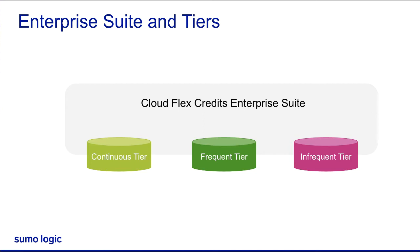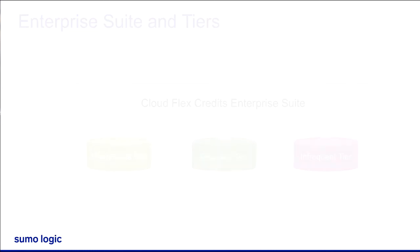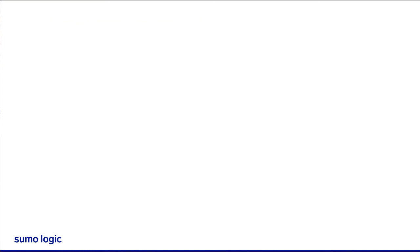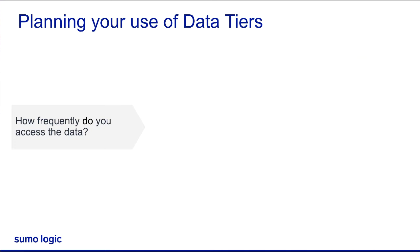Sounds good. I need some best practices for organizing data in different tiers, so I can have the most effective monitoring and troubleshooting. At Sumo, we recommend you select the data tier for a particular data set based on how often you'll access the data and how you need to access it. Consider the data you use to monitor and troubleshoot production applications and to ensure the security of your applications — this data belongs in the continuous tier.